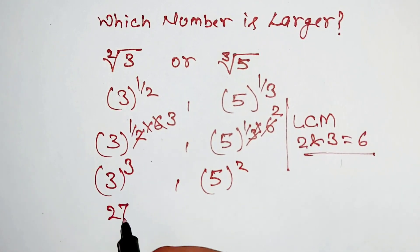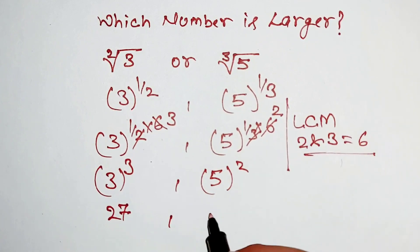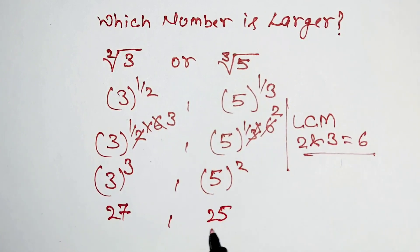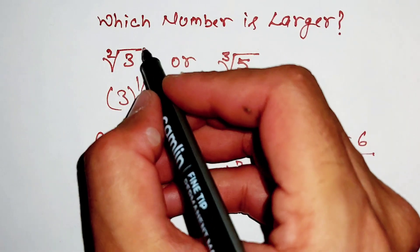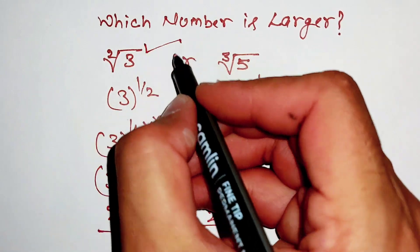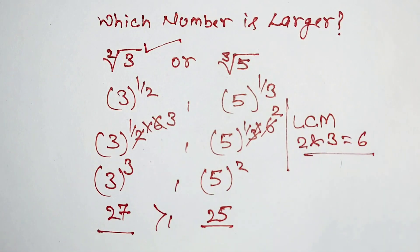Now, 3 power 3 is equal to 27, and 5 power 2 is 25. Since 27 is larger than 25, the square root of 3 is the larger number.